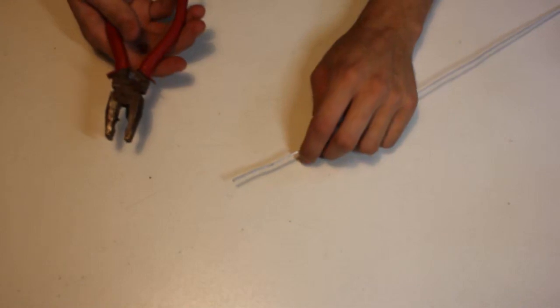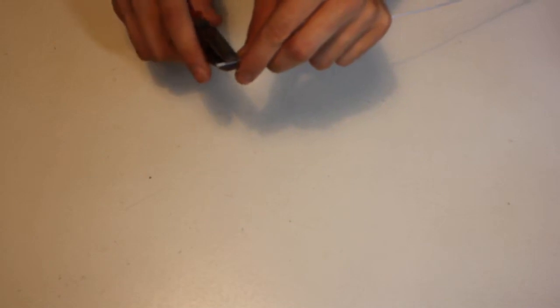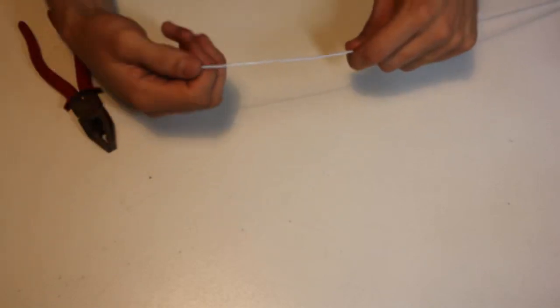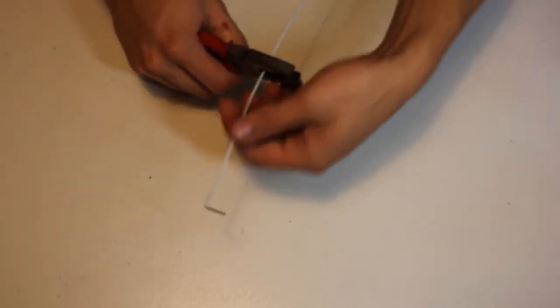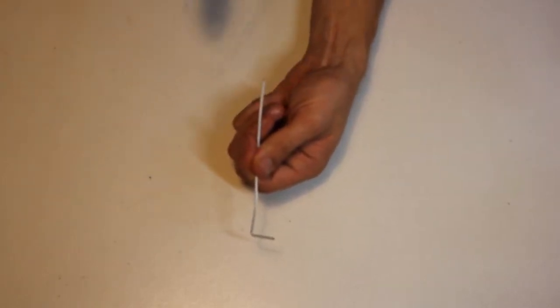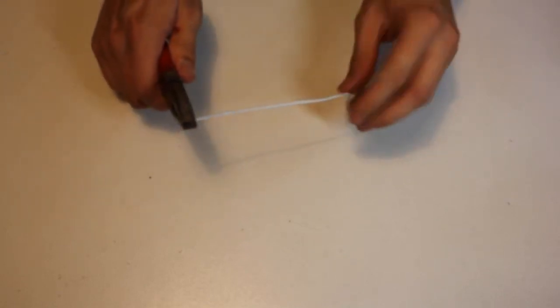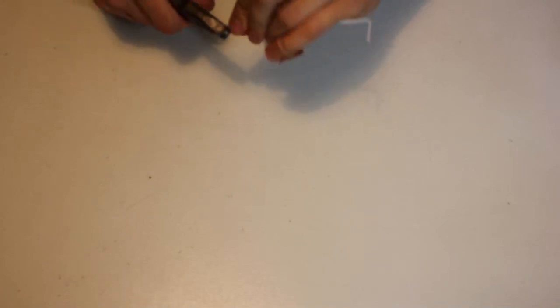So to begin with, we're going to take our pliers and we're going to bend the tip. We're going to take about a centimeter and a half at the front of this and bend that over at 90 degrees. And so then we have our hook there, and then we're going to go about four inches back from that and cut off the rest of our wire.